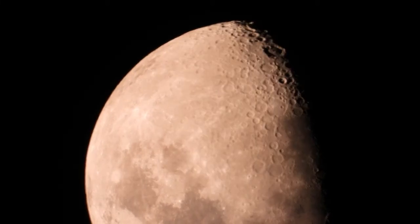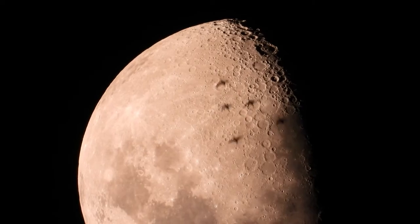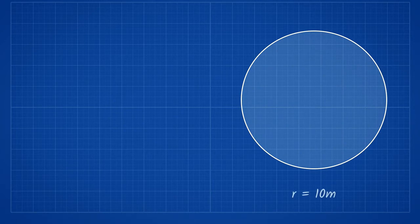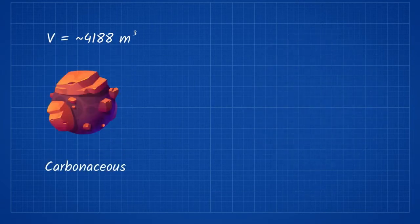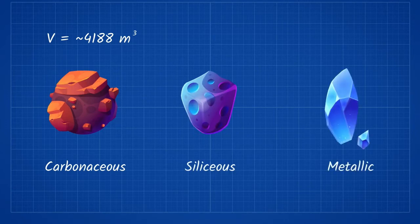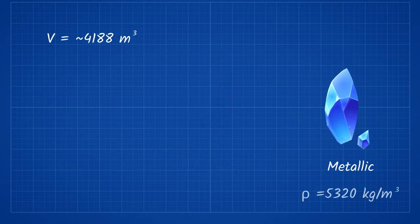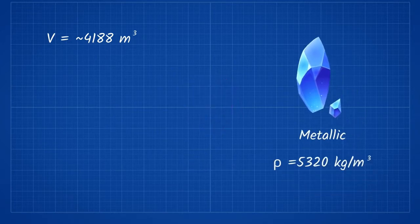To make mining the asteroid easier, some suggest moving it into the orbit of the Moon. Let's take a look at hypothetically moving an asteroid with a 10 meter radius. This means it would have an approximate volume of 4,188 meters cubed. There are three types of asteroids: carbonaceous, siliceous, and metallic. Since carbon and silica are vastly abundant on Earth, we are after the metallic variant, which has an approximate density of 5,320 kilograms per meter cubed. This means it would have an estimated mass of 22 million kilograms.